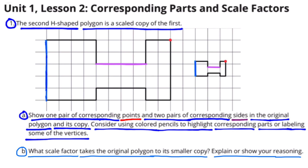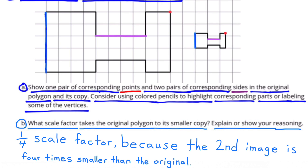Part B: What scale factor takes the original polygon to its smaller copy? Explain or show your reasoning. It is a one-fourth scale factor, because the second image is four times smaller than the original.